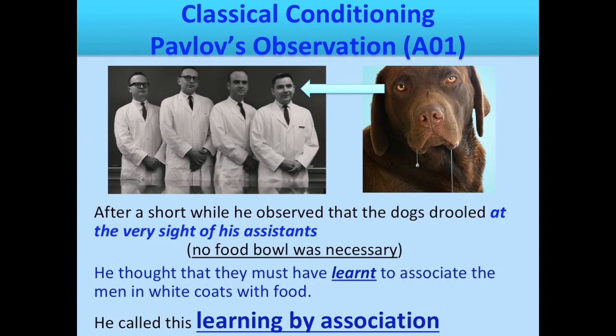After a short while, Pavlov observed that the dogs drooled at the very sight of his assistants in the white coats — no food bowl was necessary to cause the salivation. He thought they must have learned to associate the men in white coats with food, and he called this learning by association, which is a really important expression when talking about classical conditioning.